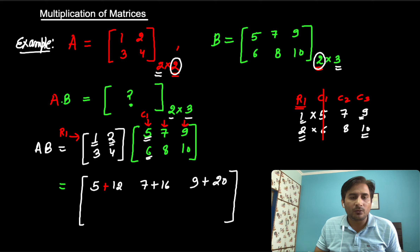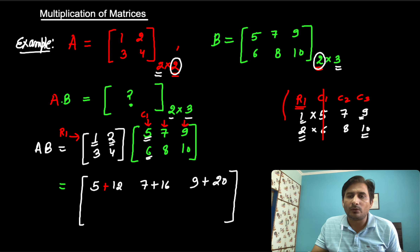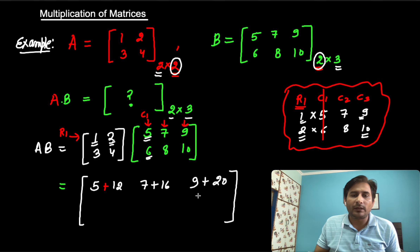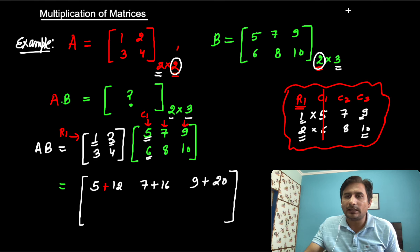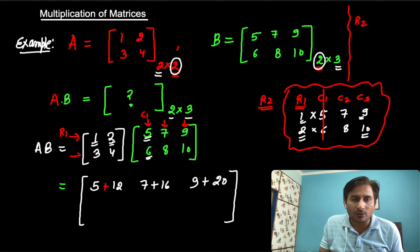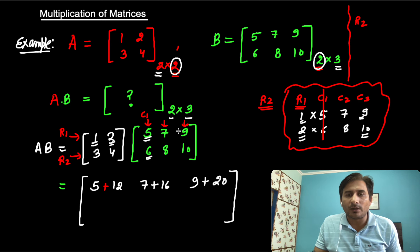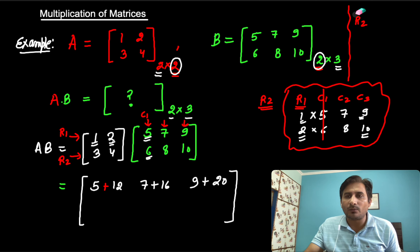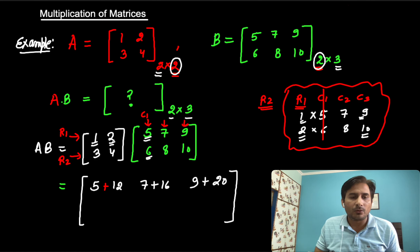Now what we need to do: we need to write row 2. So what is row 2? Row 2 is 3, 4. We need to multiply row 2 with column 1, column 2, and column 3.